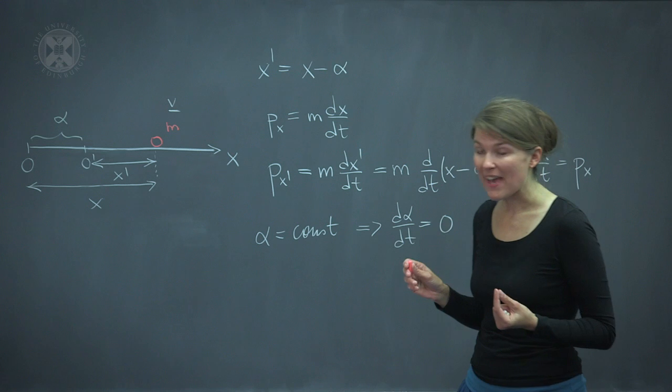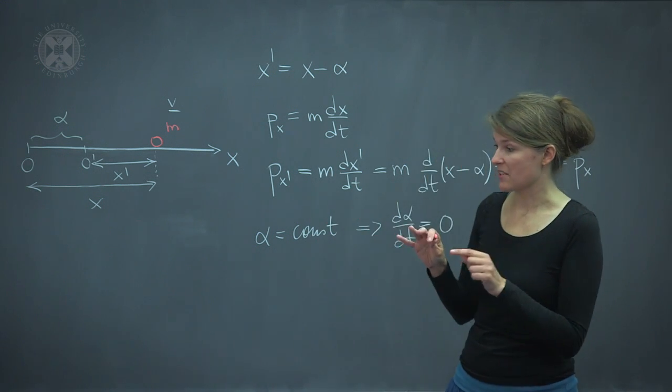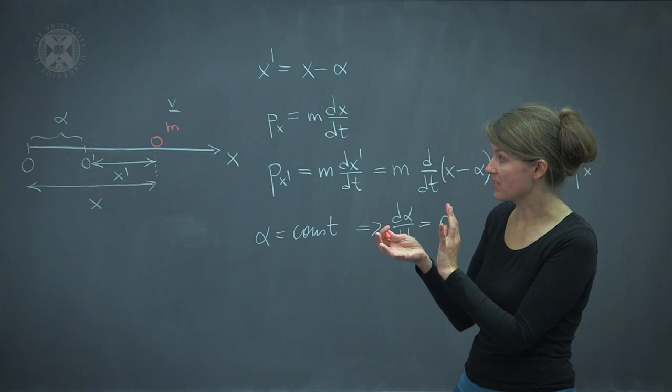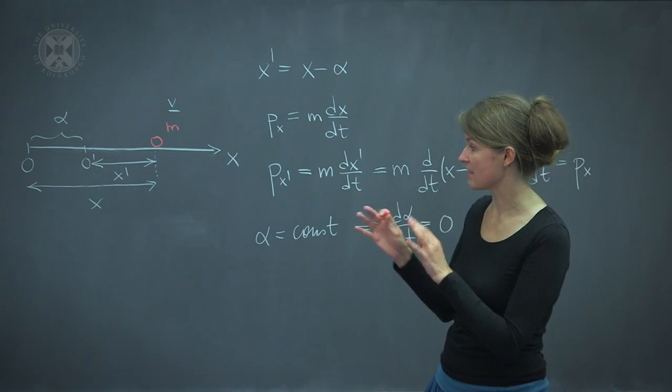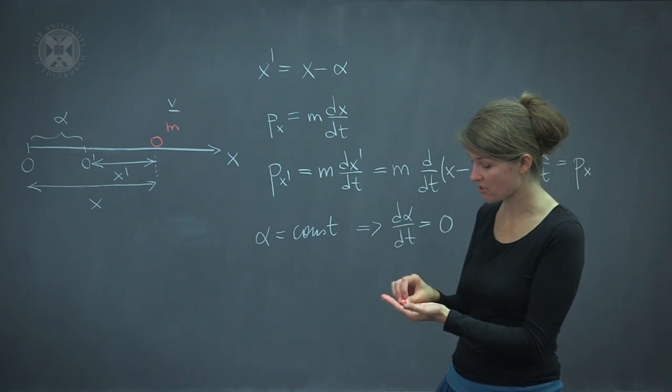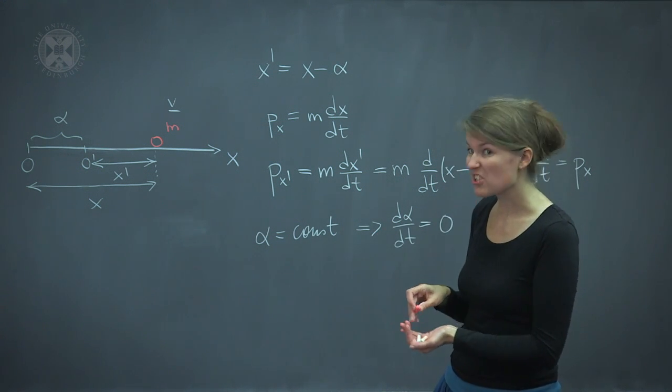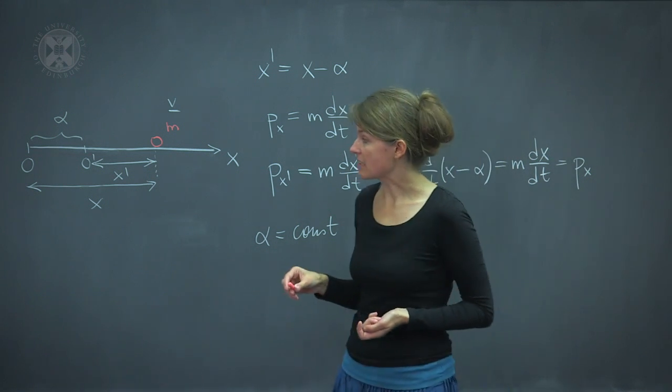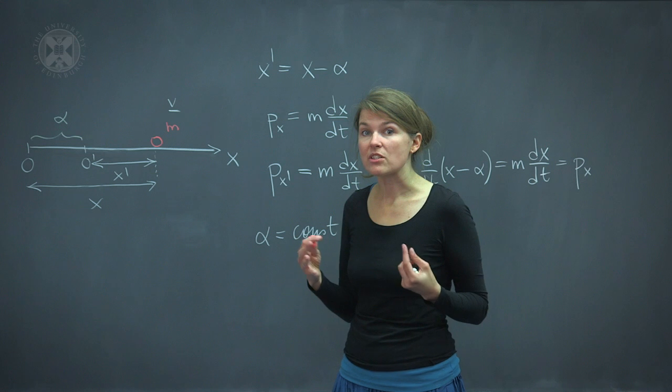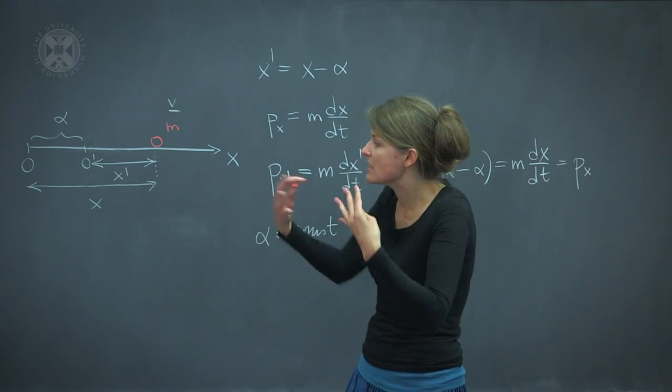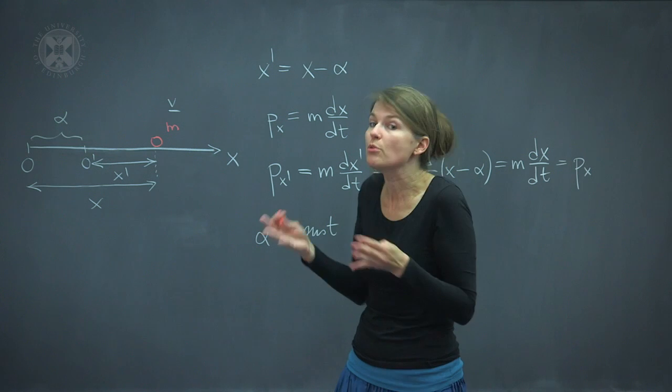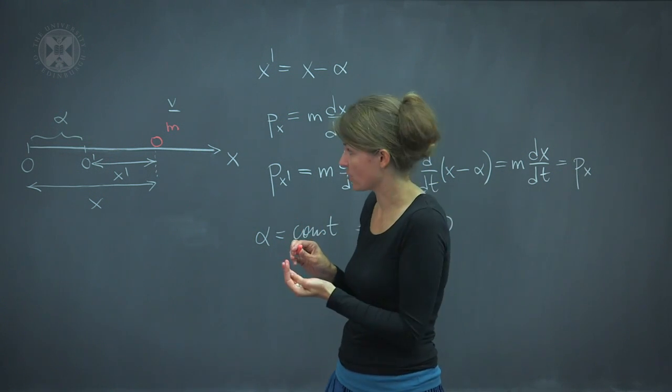So some of you may have noticed that I keep talking about this being a closed system or isolated system that we can parallel transport anywhere in space and get conserved quantities out of it. What does it mean, isolated system? That simply means that we don't have any external fields, no external forces that would ruin that beautiful symmetry for us.